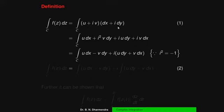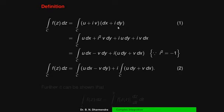Therefore, another definition of complex integration is: ∫_C f(z)dz = ∫_C (u dx − v dy) + i·∫_C (u dy + v dx). You can call the first part equation 1 and the second part equation 2.